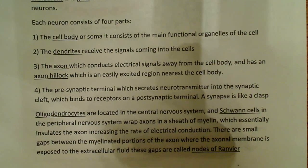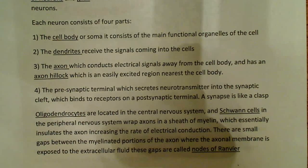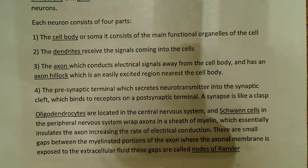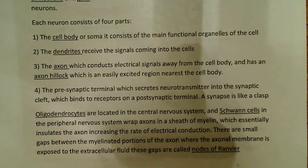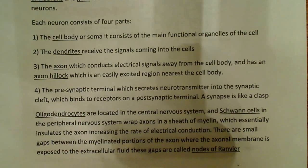The next part is the axon, which conducts electrical signals away from the cell body. The axon is the part that actually sends the signal to another neuron or to the brain. It has an axon hillock — a small structure located very close to the cell body that is easily excited. Small changes in membrane potential will change the activity there, and it's a spot where many connections from other neurons converge, making it key for triggering an action potential.